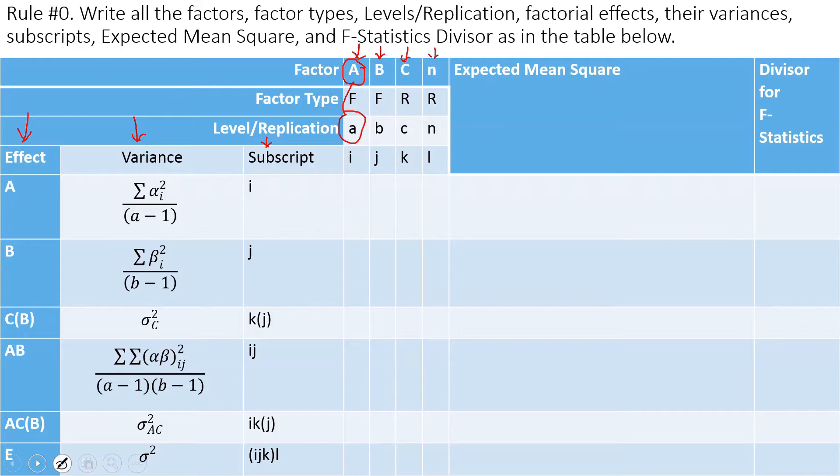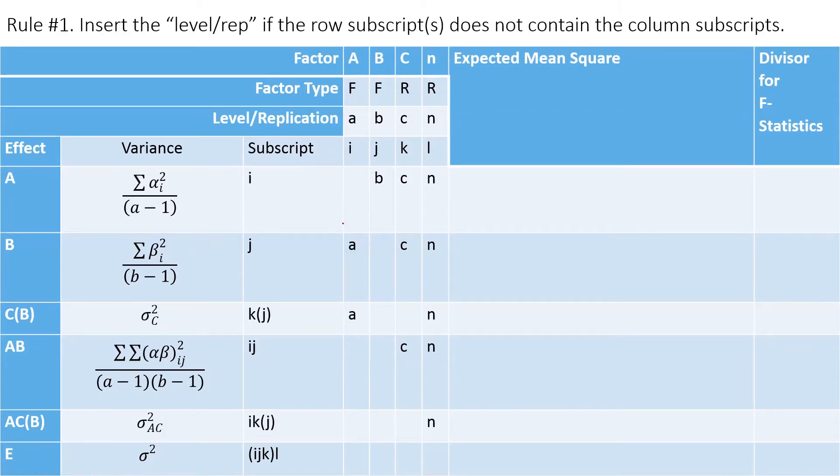Rule number one is if this row does not contain the column subscript. For example, this J does not contain I, so we write A here. Then J does not contain K, type C here, does not contain L. Similarly here we have I J which does not contain K and L, so type C.